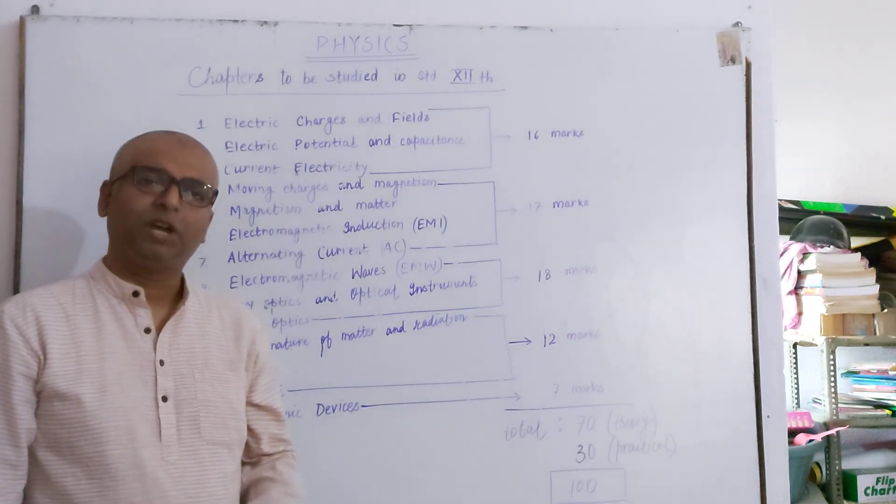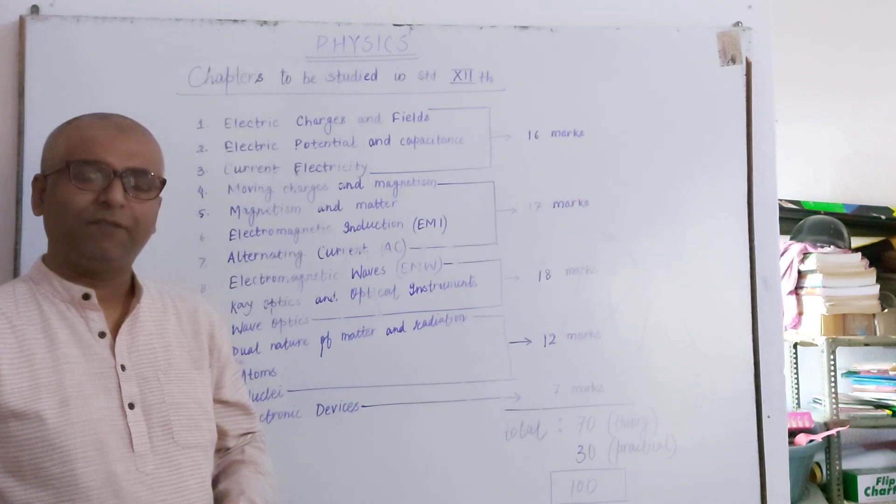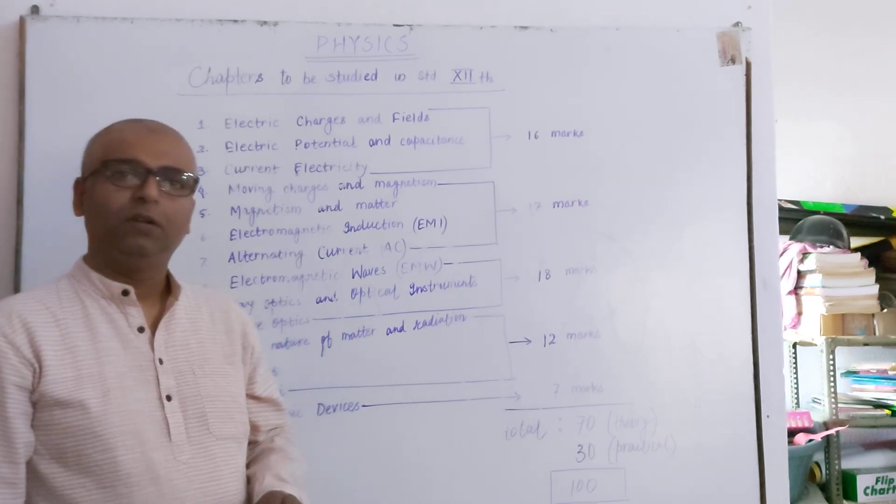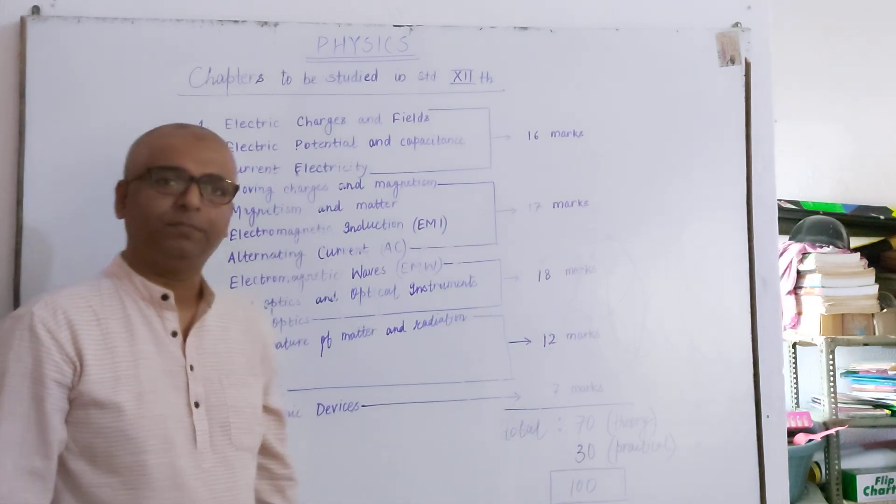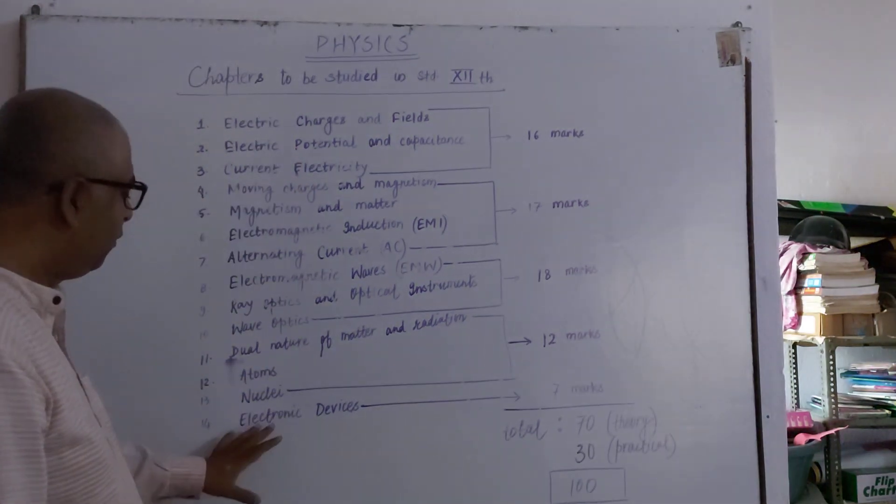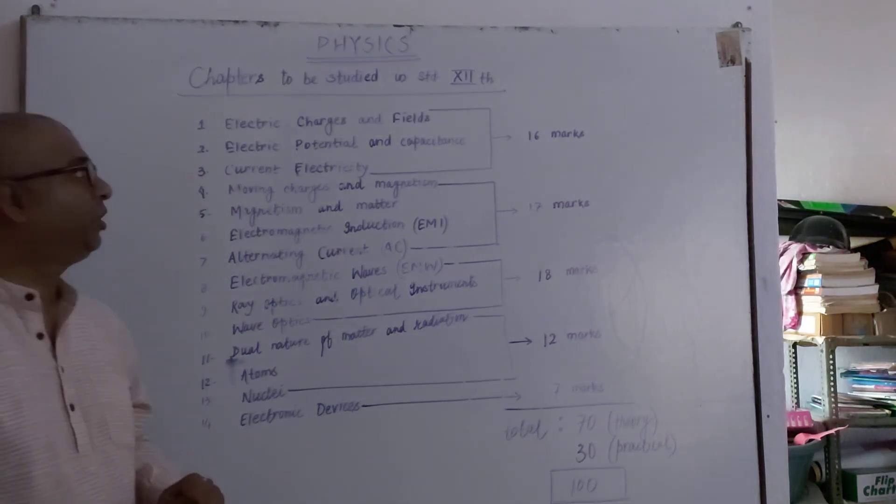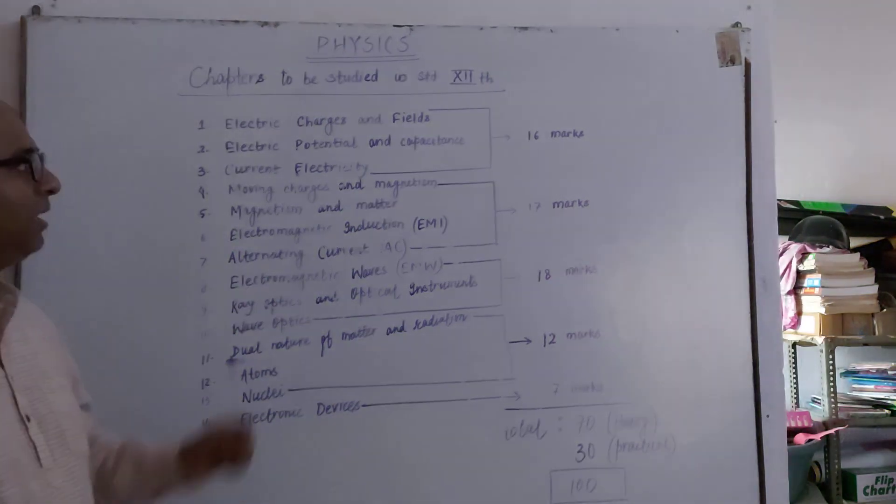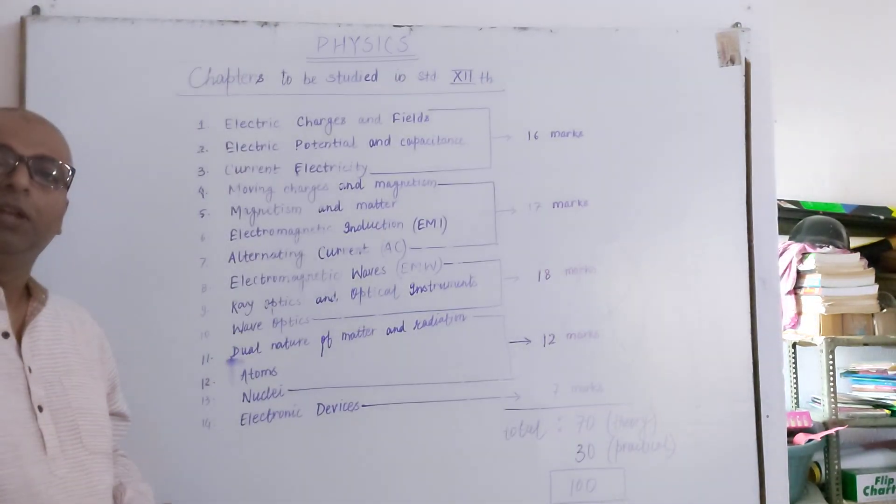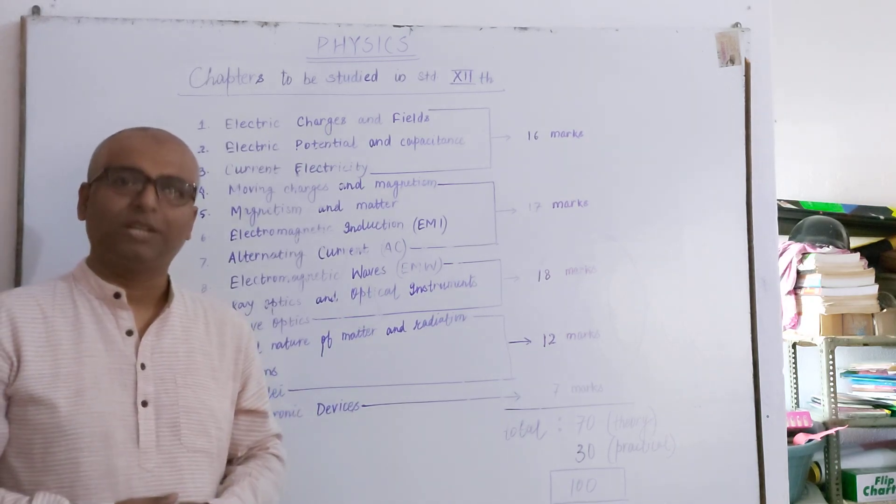Before we start the very first chapter, let us have a view of the syllabus and the chapters which you have to study in Standard 12th. These are 14 chapters. The first chapter is Electric Charges and Fields. Second chapter is Electric Potential and Capacitance. These two chapters make a unit: electrostatics.